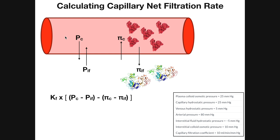Overall, the forces — or pressures — that facilitate filtration are going to be greater than the forces that facilitate reabsorption. The first pressure is the capillary hydrostatic pressure. This is the blood pressure, or hydrostatic pressure, in the capillary — the pressure exerted from the blood against the capillary walls, tending to force fluid out of the capillary and into the interstitial. This is a very strong pressure: 25 millimeters of mercury in our example.